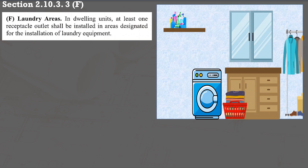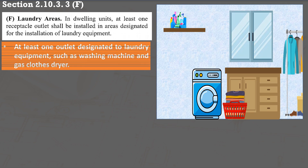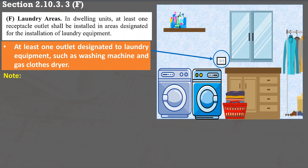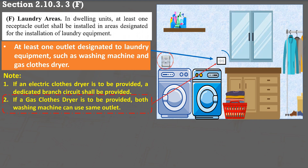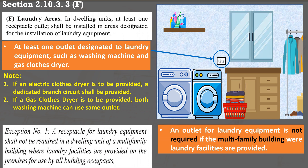For laundry areas as stated in section 2.10.3.3 F, at least one outlet is designated for laundry equipment such as a washing machine and gas clothes dryer. If an electric dryer will be provided, an additional outlet is required and it must be on a dedicated branch circuit. If a gas clothes dryer is provided, both the washing machine and gas dryer can be plugged into the same outlet. A receptacle outlet for laundry equipment is not required if a multi-family building provides laundry facilities on its premises for building occupants, as stated in exception 1.